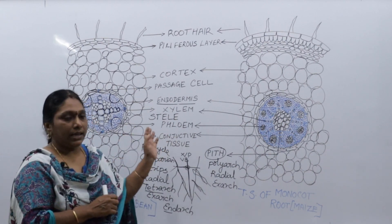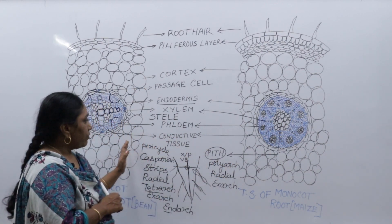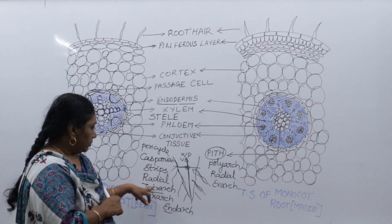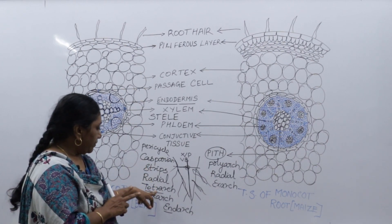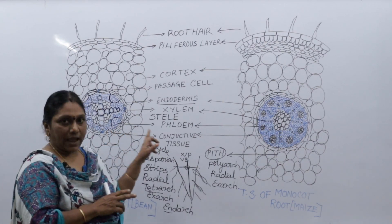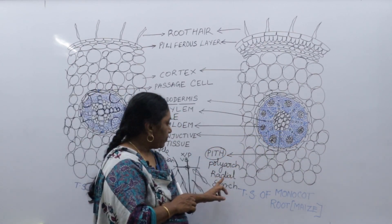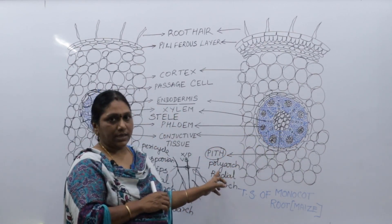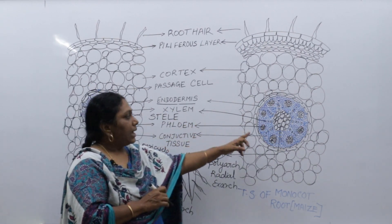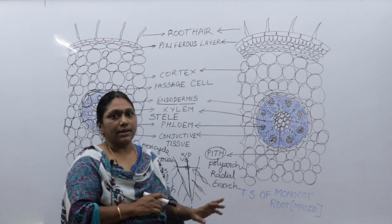To summarize the two main differences: in dicot root tetraarch xylem is present, while in monocot root polyarch xylem is present. The conjunctive tissue is parenchyma in dicot root and sclerenchyma in monocot root.